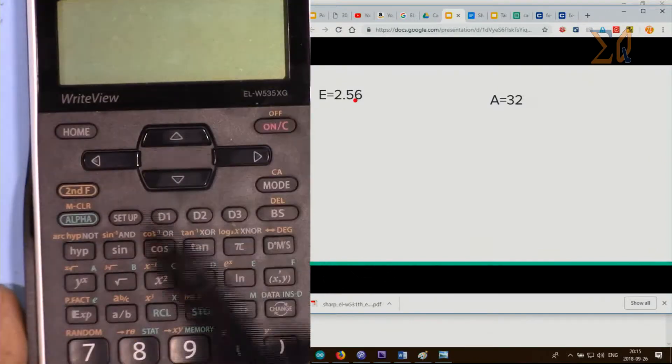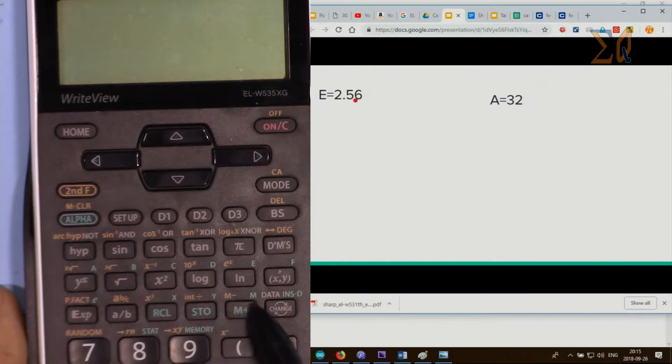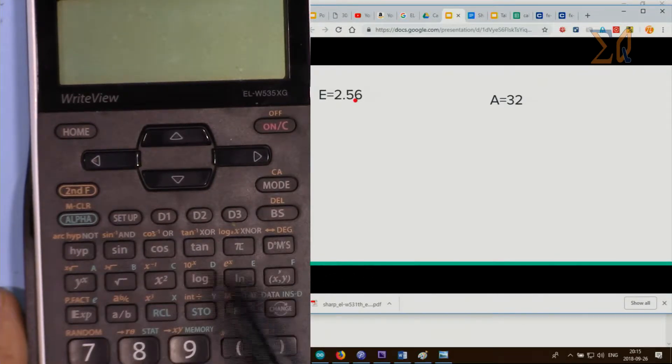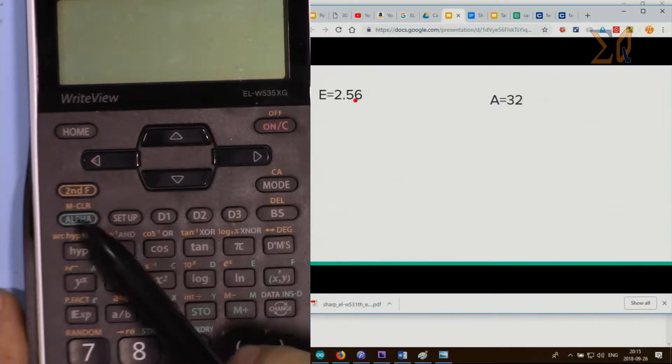In order to understand memory, we have alphabets A, B, C, D, E, F, X, Y, and M. These are all memories which you can access. If you want to use a memory, you use these two buttons: store and recall. And if you want to use them as a variable, you use alpha.